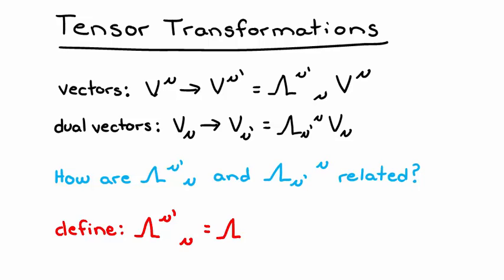This transformation, we notice, gets us from an unprimed to a primed coordinate system. So it may be intuitive that lambda upper mu lower mu prime, which instead gets us from a primed to an unprimed coordinate system, is equal to lambda inverse, as it is the inverse operation.